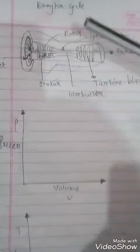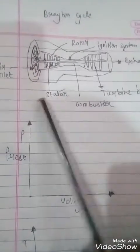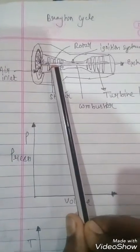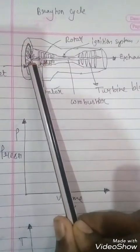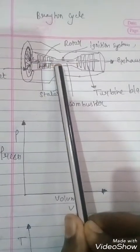This is a jet engine based on a Brayton cycle. The air gets sucked inside the jet engine through the front. We see that there is a number of blades.